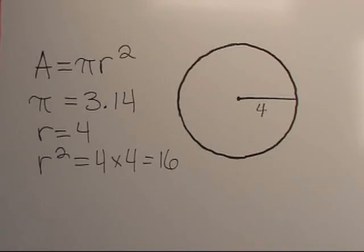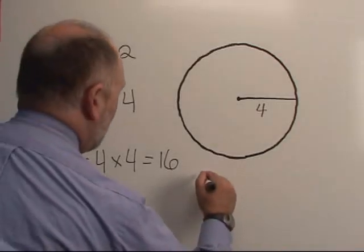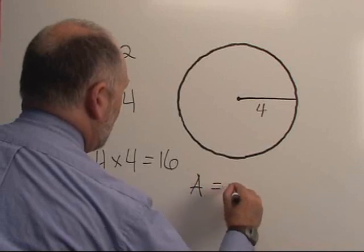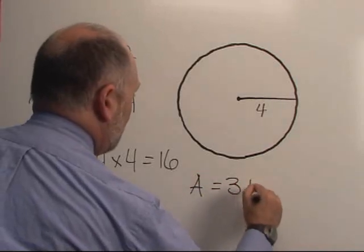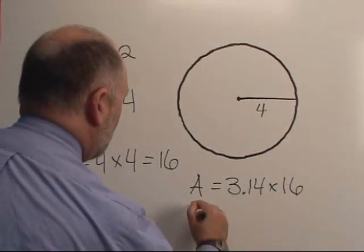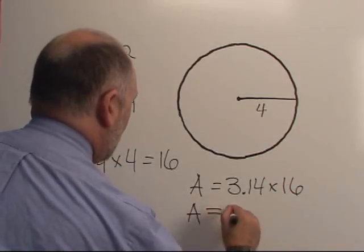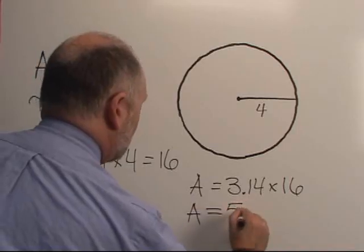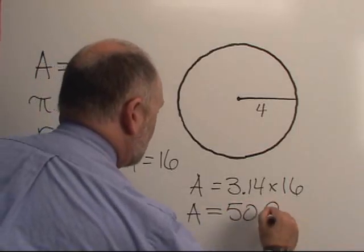So the area of this circle a is pi, 3.14, times r squared, or 16. So therefore, the area of this circle is 50.24.